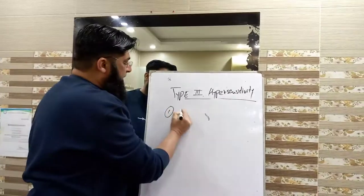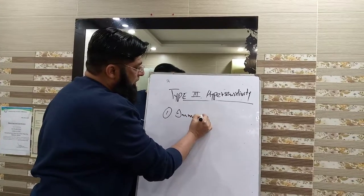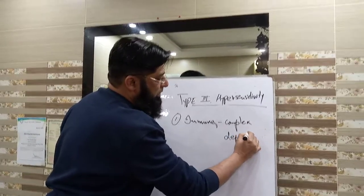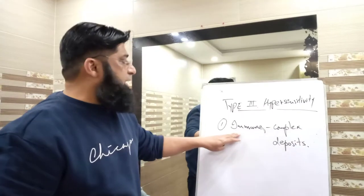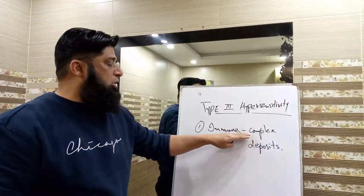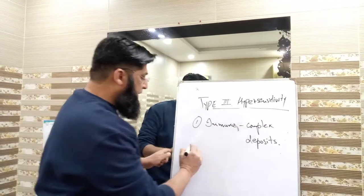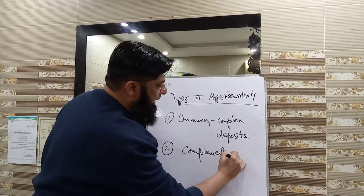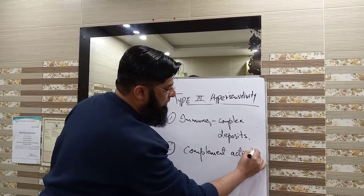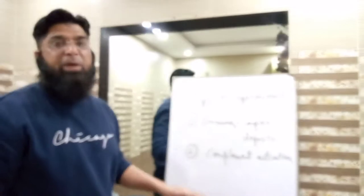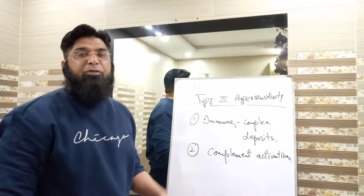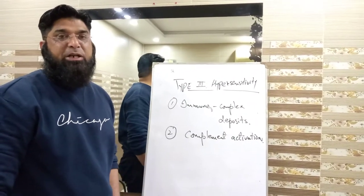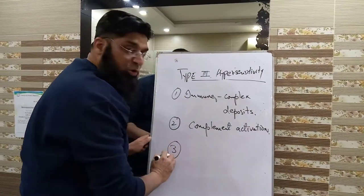Number one: formation of immune complex deposits. This is the number one characteristic feature of type 3 hypersensitivity. Number two: complement system activation — like C5a, C3a complement proteins activation, or even membrane attack complex activation. Number three: chronic inflammation.